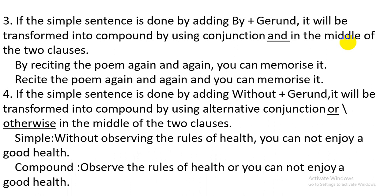Number four: if the simple sentence is done by adding 'without plus gerund', it will be transformed into a compound sentence by using the alternative conjunction 'or' or 'otherwise' in the middle of the two clauses. Simple sentence: 'Without observing the rules of health, you cannot enjoy good health.' Here we change 'without plus gerund' into a main clause. This main clause takes the structure of an imperative sentence. Then we use 'or' in the middle of the two clauses.